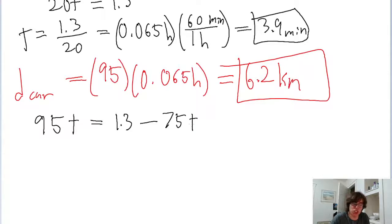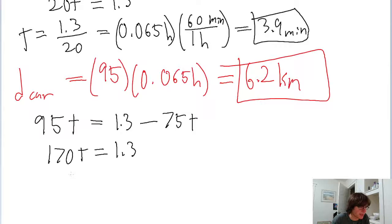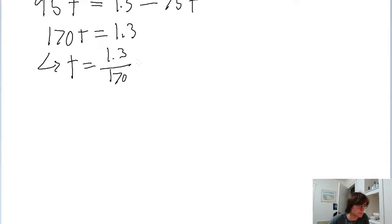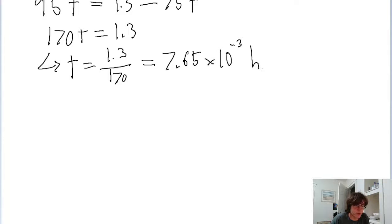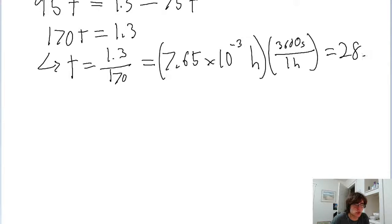To solve for t, add 75t to both sides of the equation. We end up with 170 kilometers per hour times t on the left side equals 1.3. Dividing both sides by 170, the time equals 1.3 divided by 170, which is 7.65 times 10 to the power of negative three hours. Converting to seconds — since one hour equals 3600 seconds — that gives us 28 seconds.